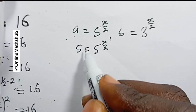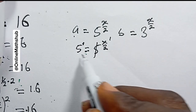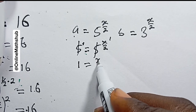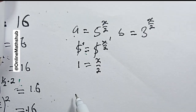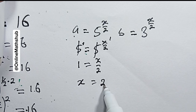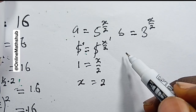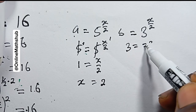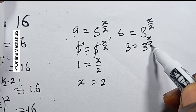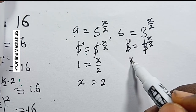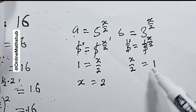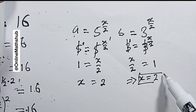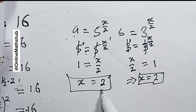Since 5 = 5^1, we can write it as 5 over 1, and because the bases are the same we equate the exponents: 1 = x/2, so x = 2. From the b path: 3 = 3^(x/2) also gives x/2 = 1, so x = 2. Whichever equation you solve, you get the same value for x.